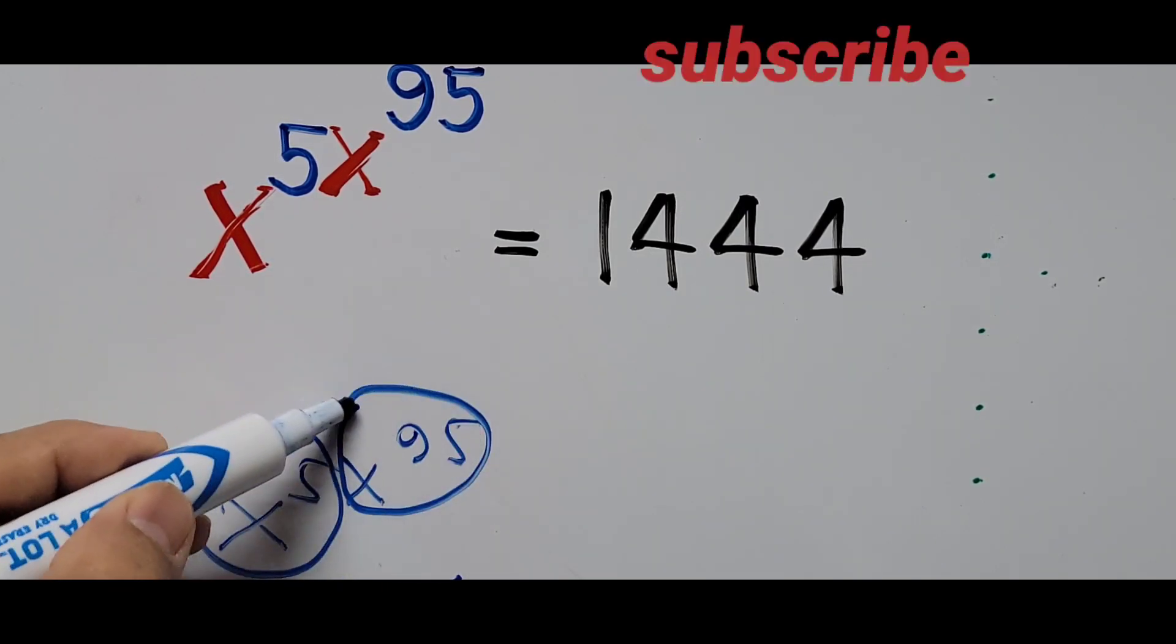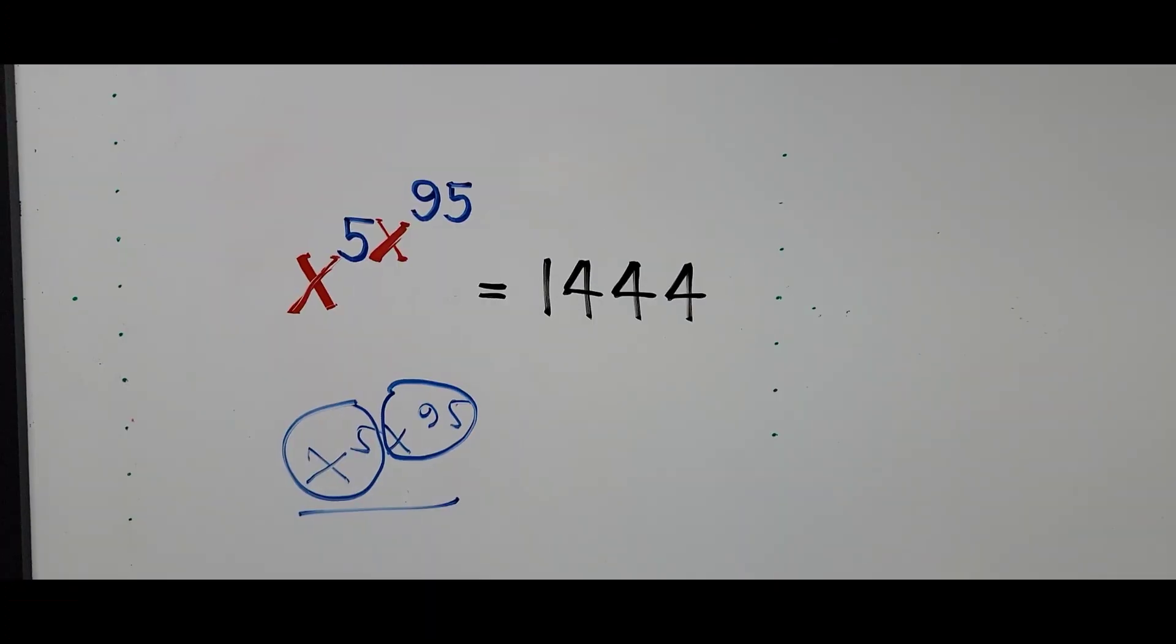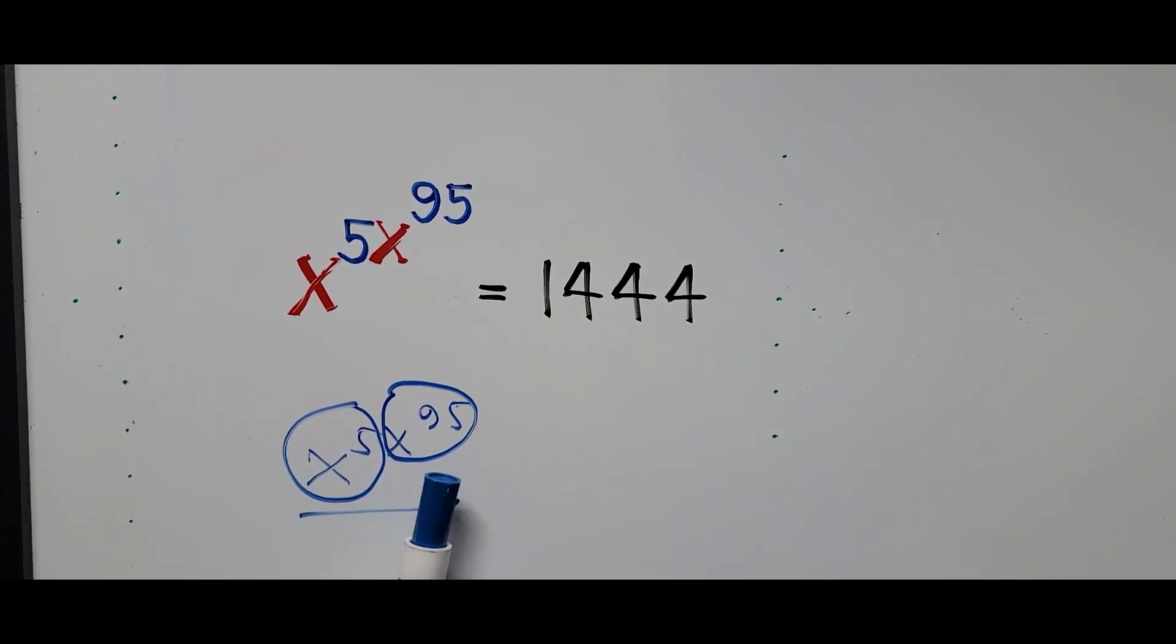Our aim here is to make the base the same as its exponent. So to make this base look exactly as its power, x to the power of 95, we have to divide 5 out of 95.